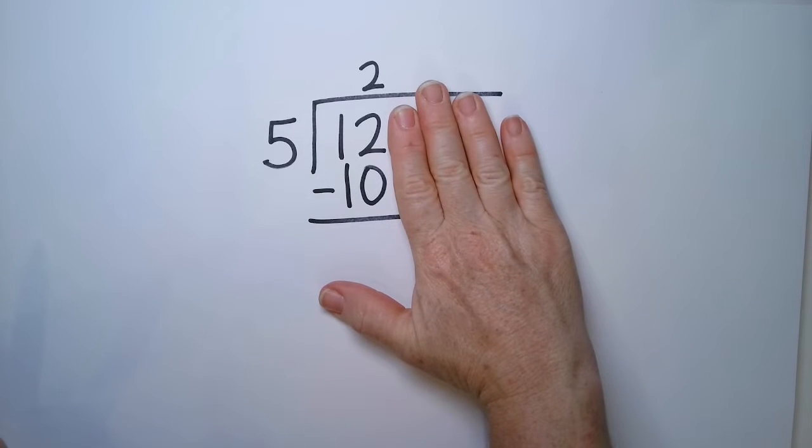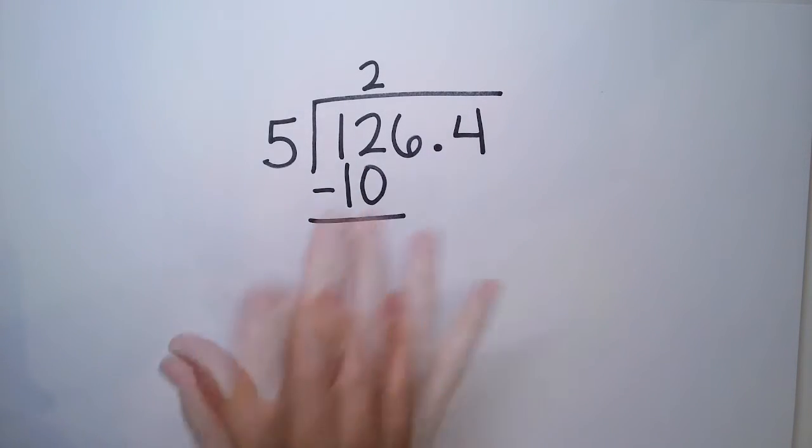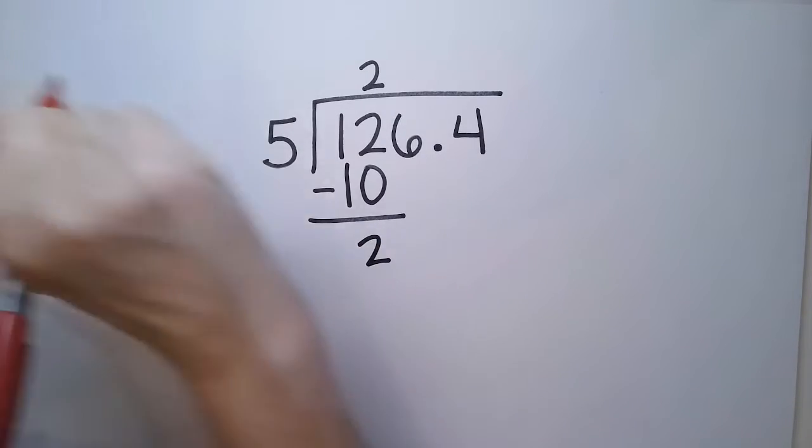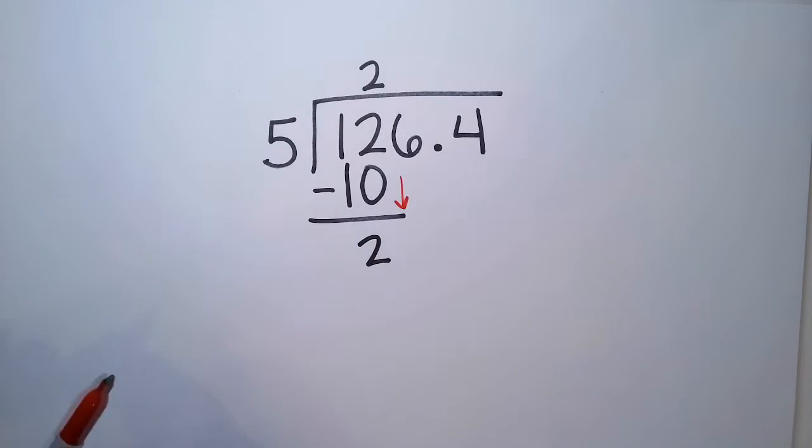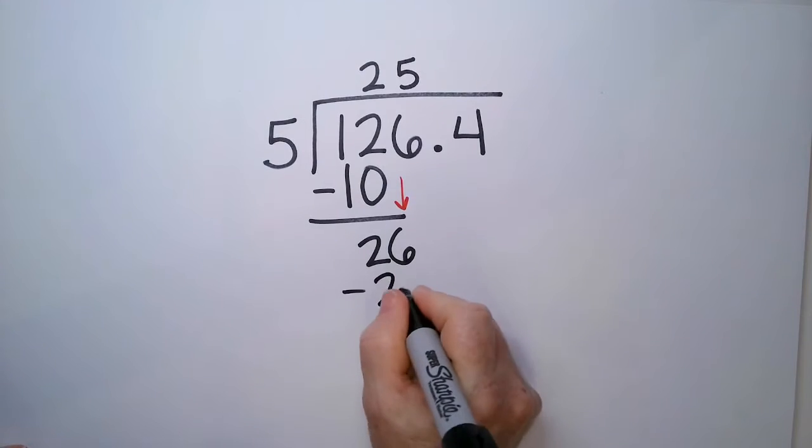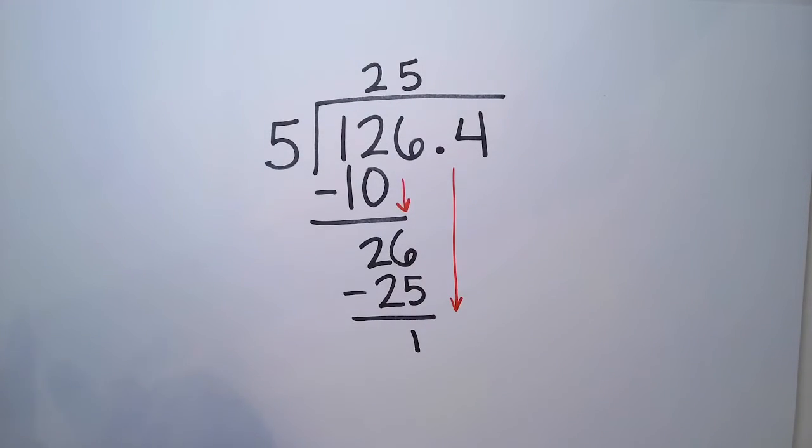A lot of times with division, it's easy to get messed up because the numbers, you're writing them too close or too scrunched. So make everything nice and big and clear so you don't make math mistakes that you don't need to go back and fix. 5 goes into 26 five times. 5 times 5 is 25. We have a 1 left over, and we're going to drop that 4 down to make 14.